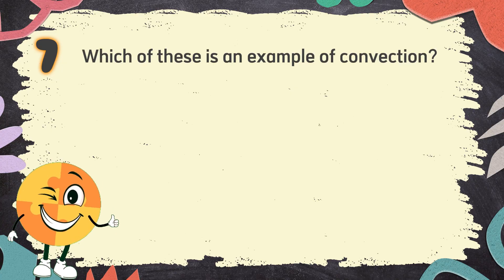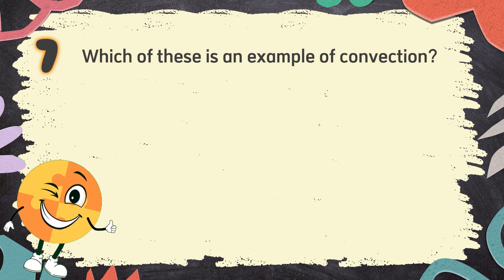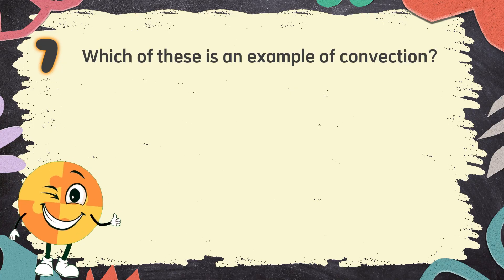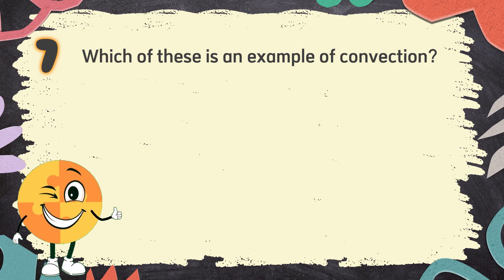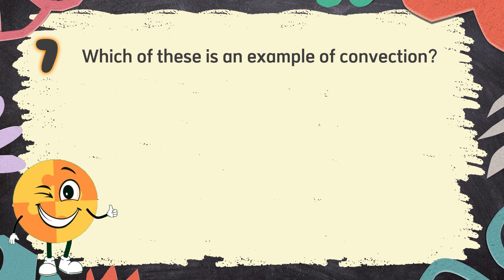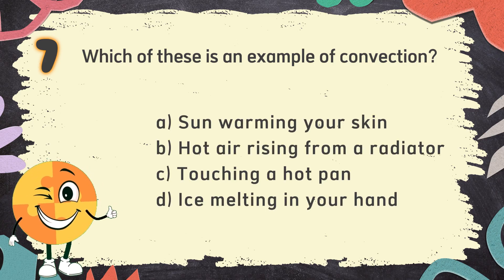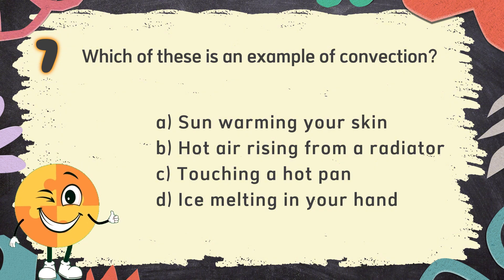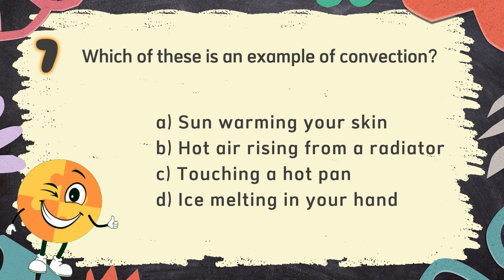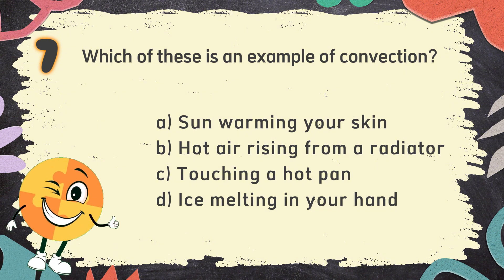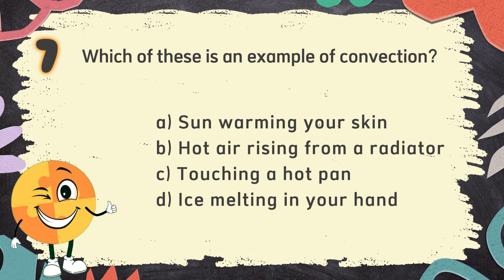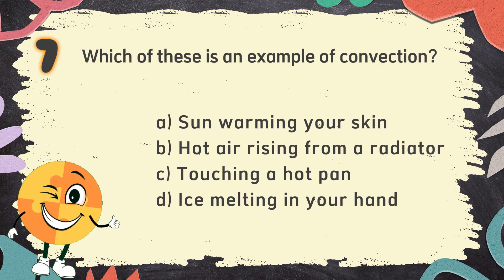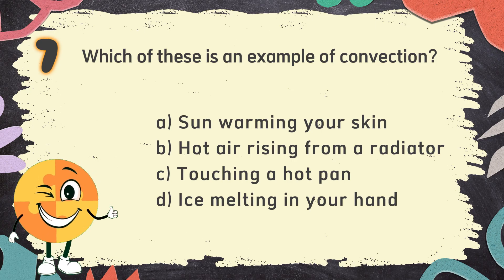Number 7. Which of these is an example of convection? The choices are: A. Sun warming your skin, B. Hot air rising from a radiator, C. Touching a hot pan, D. Ice melting in your hand.